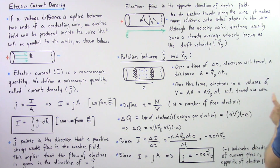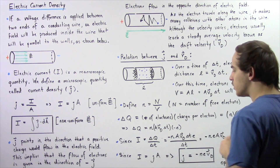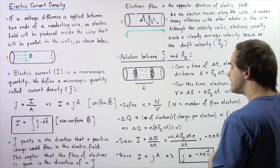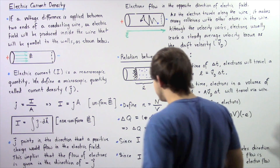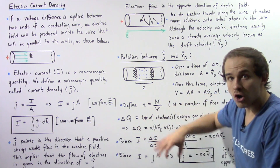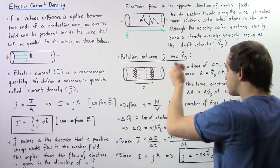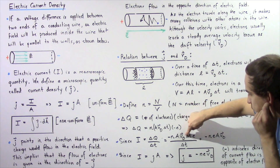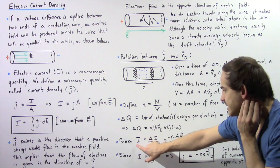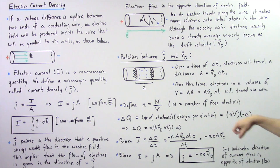We replace volume with our equation and multiply by negative e. The total charge in this section is Δq = n · A · v_d · Δt · (-e). By definition, the electric current I equals the change in charge Δq divided by the change in time Δt. Substituting, the Δt terms on top and bottom cancel, and we find that the electric current in this section is I = -n · e · A · v_d.